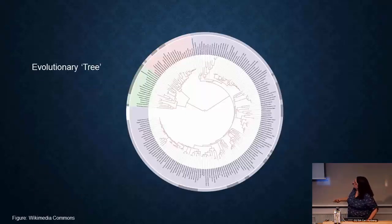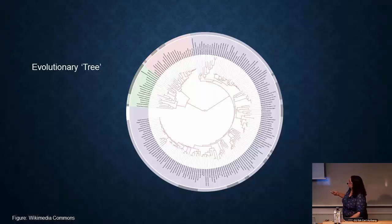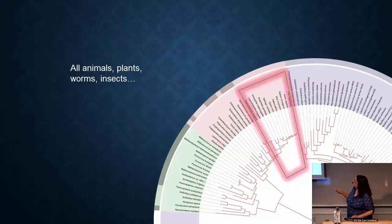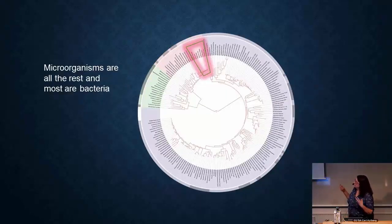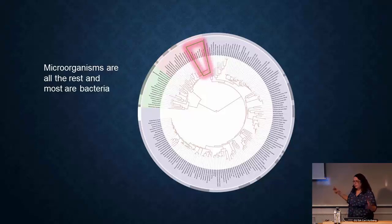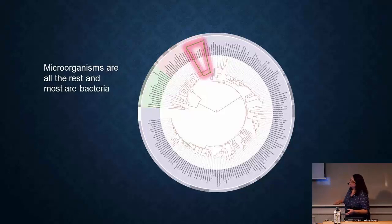This shows an evolutionary tree of all organisms on Earth. That one small part of the tree includes all animals, plants, worms, and insects. All the rest are microorganisms. If you can see the blue color here, those are the bacteria. So if you look at the diversity of life on Earth as we know it, bacteria make up the vast amount of that diversity — which is why I'll be talking in generalities so much.